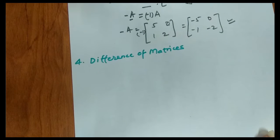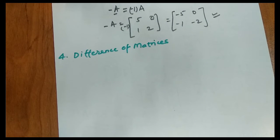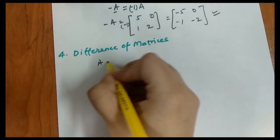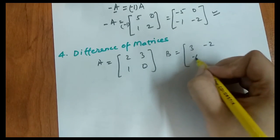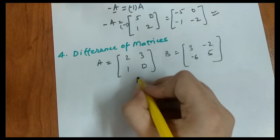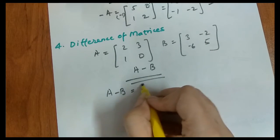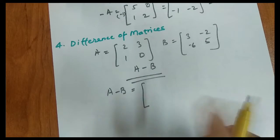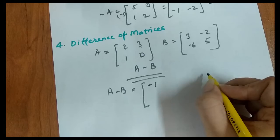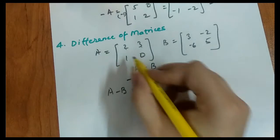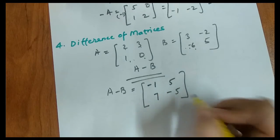The next operation is the difference of matrices, which is simply subtraction. Let's take matrix A = [2, 3, 1, 0] and matrix B = [3, −2, −6, 5]. We have to find A minus B. We subtract corresponding elements: 2−3 = −1, 3−(−2) = 5, 1−(−6) = 7, 0−5 = −5. So A minus B = [−1, 5, 7, −5].